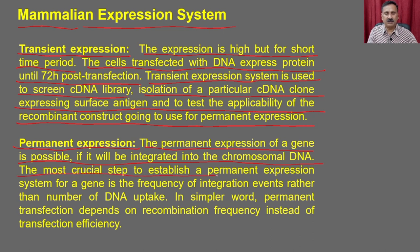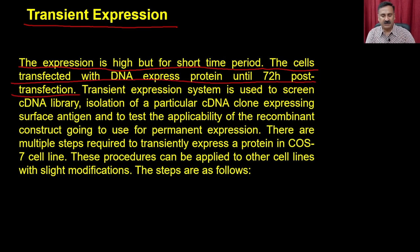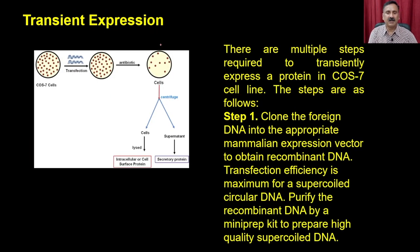Transient expression is mostly used to test whether your construct is correct. For permanent expression, it is possible if the gene is integrated into chromosomal DNA. The most crucial step to establish a permanent expression system is the frequency of integration events rather than the number of gene uptake. In simpler words, permanent transfection depends on recombination frequency instead of transfection efficiency.